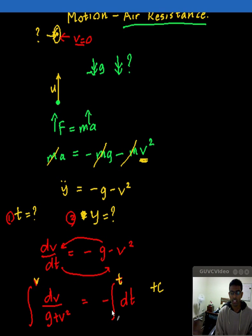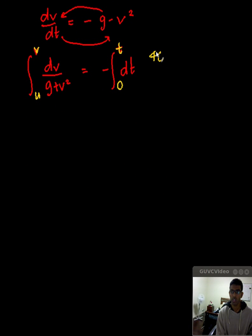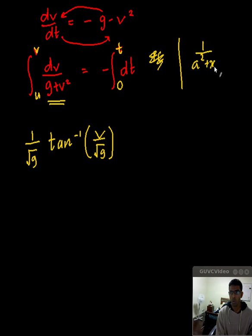So at a certain time t, the velocity is v. At t equals zero, I probably should have mentioned that it starts off with the velocity of u. So how do we go ahead and integrate this one? This side is fairly straightforward. It's just going to be equal to minus t. But this side over here, it's going to be tan inverse. So this is actually one of the known integrals. It's going to be tan inverse of velocity on square root of g. And outside it's going to be one on square root of g.